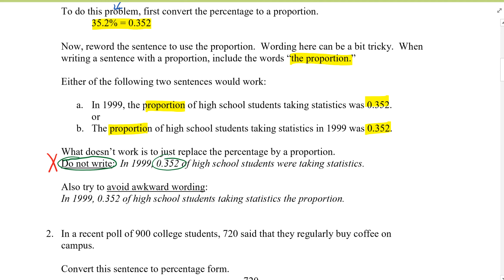Another awkward wording I see is: 'In 1999, 0.352 of high school students taking statistics' and then adding the word 'proportion' after — that's very awkward. So rewrite it. Once you finish writing, go back and read it again to see if it makes sense. That's example one.